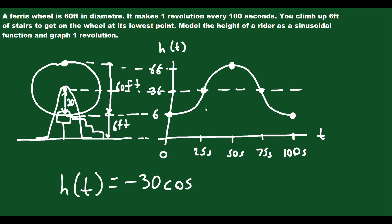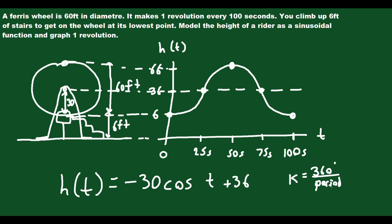We know the axis is at a height of 36, so we add plus 36 at the end of the equation. There's no phase shift — we're not moving left or right. The only thing I need to find is the k value in front of T to change the period. K equals 360 degrees divided by the period. So 360 divided by 100 equals 3.6. So I put 3.6 in front of T. The full equation is H(t) = −30 cos(3.6t) + 36, which represents your height going around the Ferris wheel.